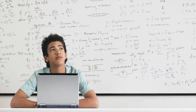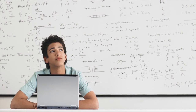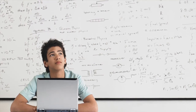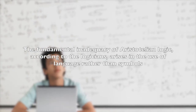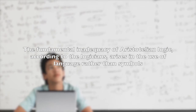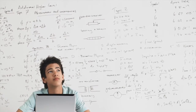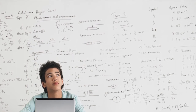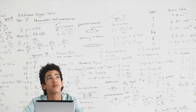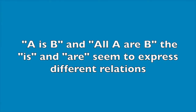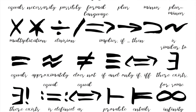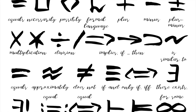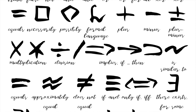In the 19th century, a new logical field arose called logistic or symbolic logic. Its characteristic form is the application of mathematical symbols to logic, and its substance is the analysis of relations. The fundamental inadequacy of Aristotelian logic, according to the logicians, arises in the use of language rather than symbols. In 1854, George Boole created the first algebra of logic to express natural language arguments in algebraic form. The application of mathematical symbols to logic not only removes ambiguity — such as the alleged ambiguity of the copula in statements like 'a is b' versus 'all a are b' — but also greatly simplifies logical processes and extends their application far beyond the province of Aristotelian logic.